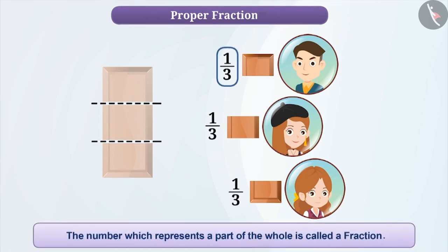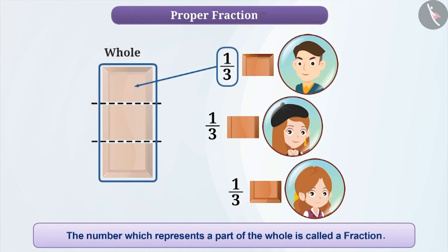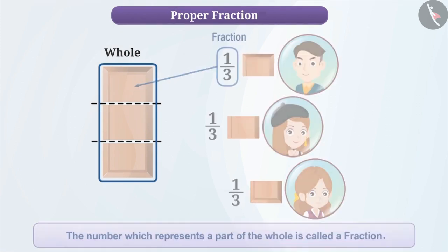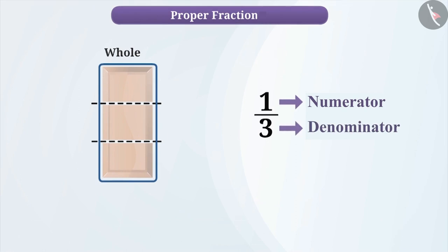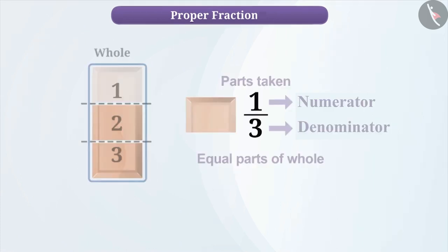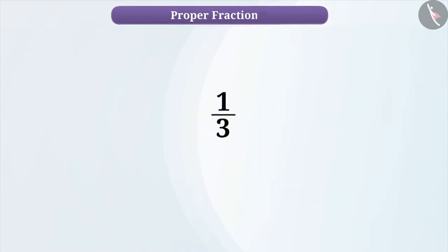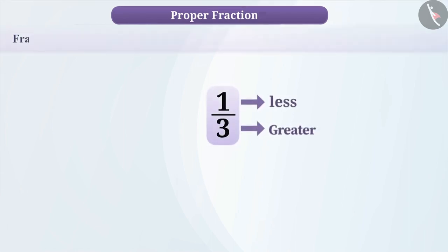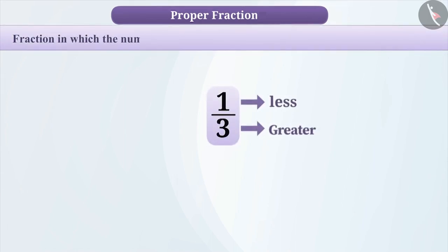The number which represents a part of the whole is called a fraction. Fraction is expressed as numerator by denominator. The number of equal parts the whole is divided into becomes the denominator, and the number of parts taken becomes the numerator. In this fraction, the numerator that is 1 is less than the denominator that is 3. Fraction in which the numerator is less than the denominator is called a proper fraction.